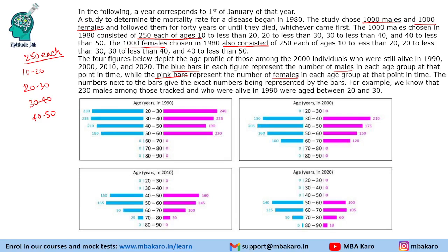For example, 230 males among those tracked who were alive in 1990 were aged between 20 and 30. So 230 males in 1990 were in age group 20 to 30. Most questions are about the number of deaths: total 250 people minus the alive people equals the number of deaths in that category.